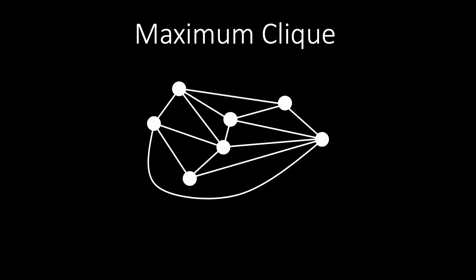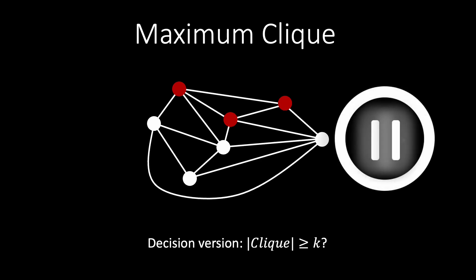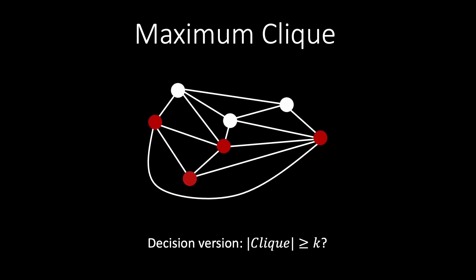Another interesting graph problem is the maximum clique problem. A clique of a graph is a subset of the vertices that are all pairwise connected by an edge. In the maximum clique problem, we want to find the largest subset of vertices that form a clique within a graph. In the decision version, we ask if a graph contains a clique of size at least k. Can you pause the video and find a clique larger than the one displayed? You may have found this clique of size 4.